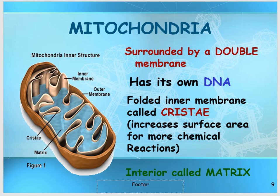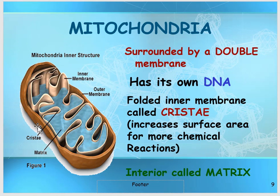The next organelle is mitochondria. Mitochondria is like the powerhouse of the cell because it generates power for the cell — similar to a fireplace that burns firewood to generate heat. Mitochondria burns glucose to generate energy for our body. It has its own DNA. On the outside, it has a protective membrane, and on the inside the inner membrane has many foldings called cristae.